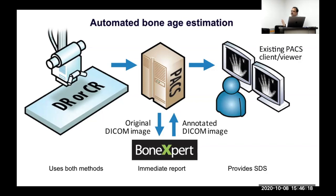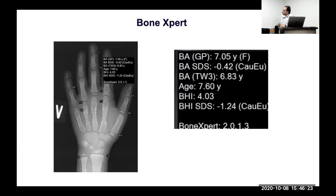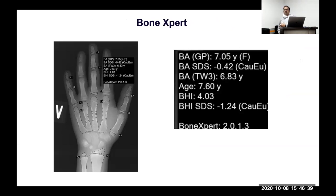The report provides standard deviation scores so if you know the mean you can derive the SDS. In bone age reports, Tanner-Whitehouse tends to be around three to six months behind GP. For example, a report might show 7.05 by TW and 6.83 by GP. The bone age standard deviation score is compared to a specific — typically Caucasian — reference population.